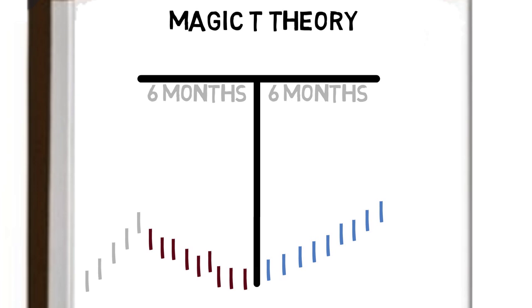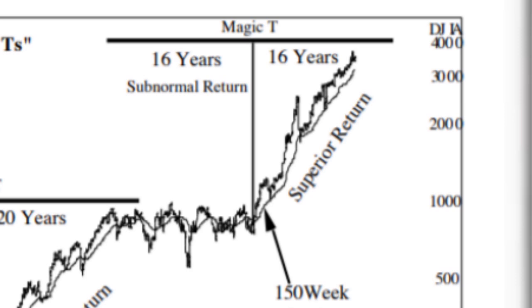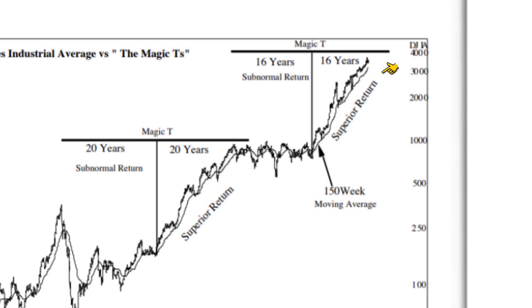Here we can see an example of a longer-term T theory based on the Dow Jones Index between 1910 and 1990. Using the most recent T, we can see a 16-year period of sub-normal returns followed by a near 16-year period of superior performance. It's certainly an interesting concept worth further research, and if a trader of Schwartz's caliber puts the concept at the core of his methodology, it's worth considering.